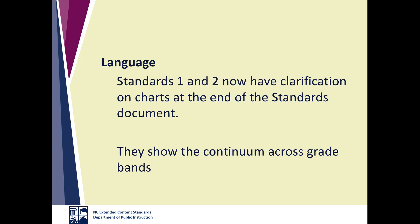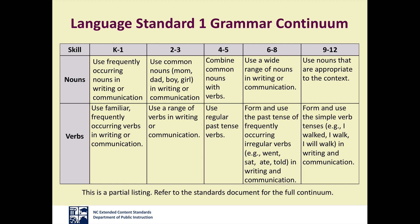Finally, there is a major format change in the language strand. Language Standard 9-10.1 reads: 'Demonstrate standard English grammar and usage within the 9-12 grammar continuum when writing or communicating.' All grades refer to a continuum for Standards 1 and 2, located in a chart at the end of the ELA Extended Content Standards document. Instead of each grade having its own expectations, the expectations are expressed by grade band: K-1, 2-3, 4-5, 6-8, and high school 9-12. The continuums are the only place North Carolina expectations are expressed by grade band.